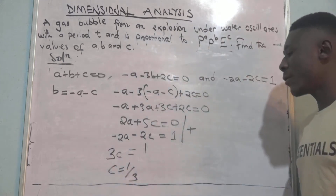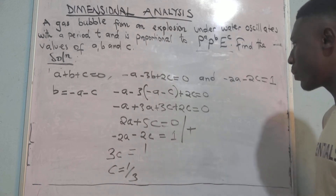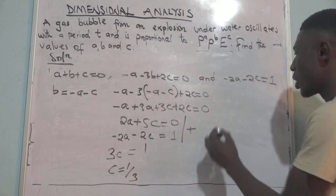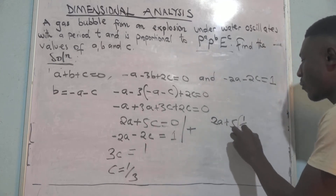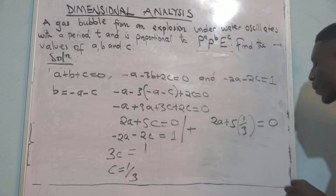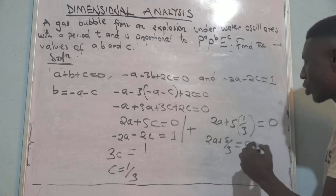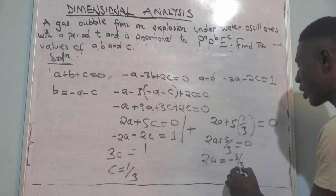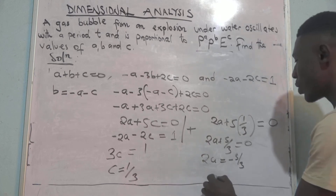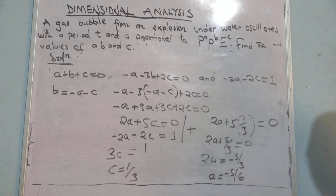Now that we have the value for C, we find A using the simpler equation, 2A plus 5C equals 0. Substituting C equals 1 over 3 gives 2A plus 5 over 3 equals 0, so 2A equals negative 5 over 3, therefore A equals negative 5 over 6.